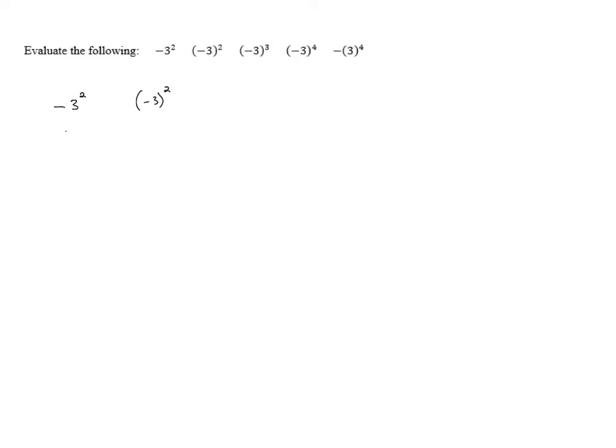So what this really means is we've got 3 times 3, and then we apply a negative on the outside. When we do this, we've got a negative times a positive, which gives us a negative, and we end up with negative 9.